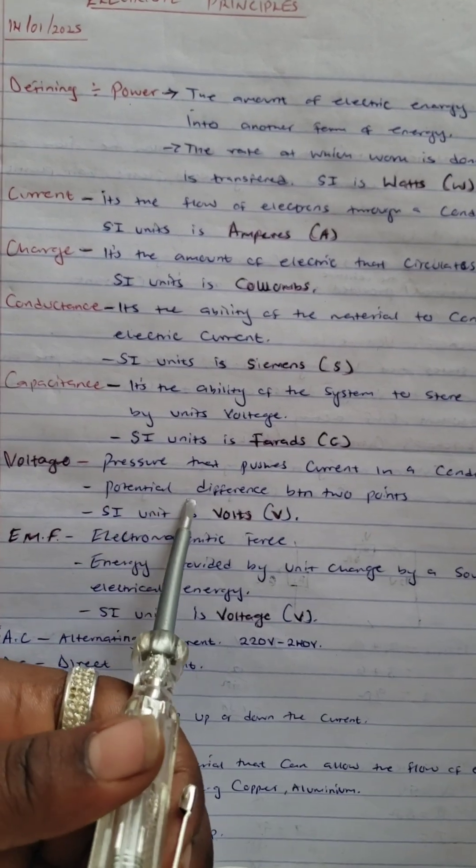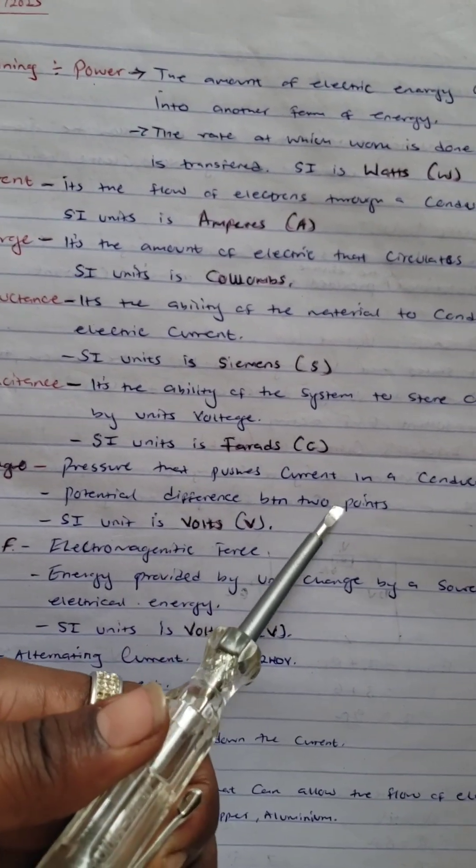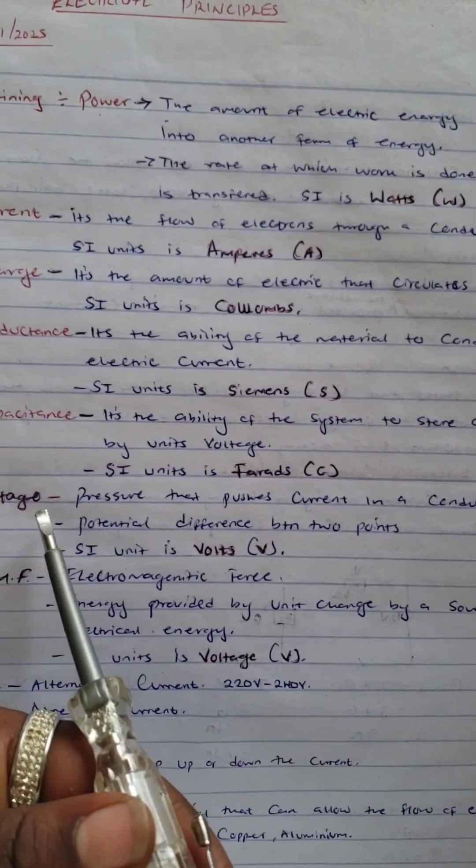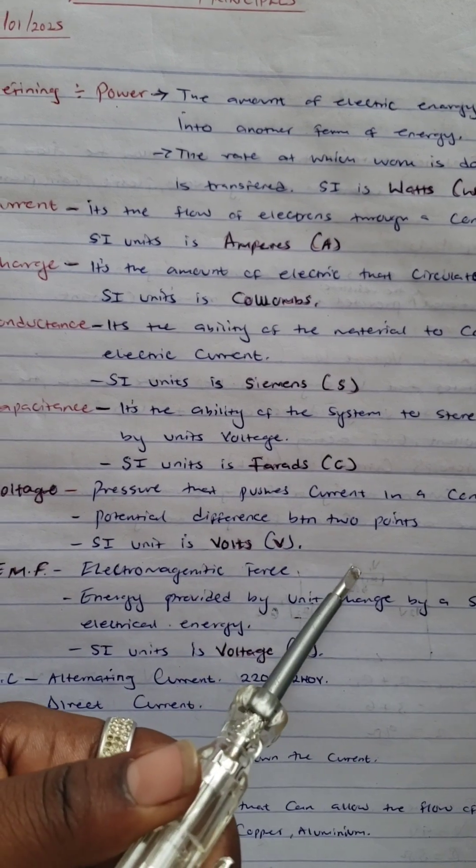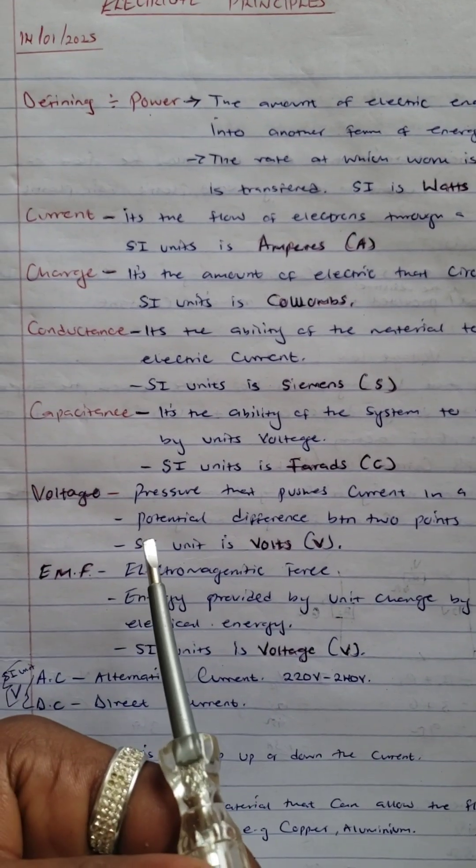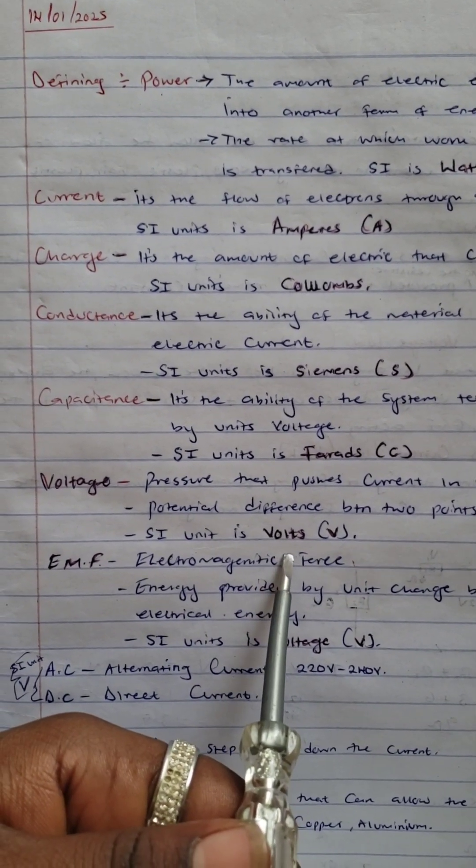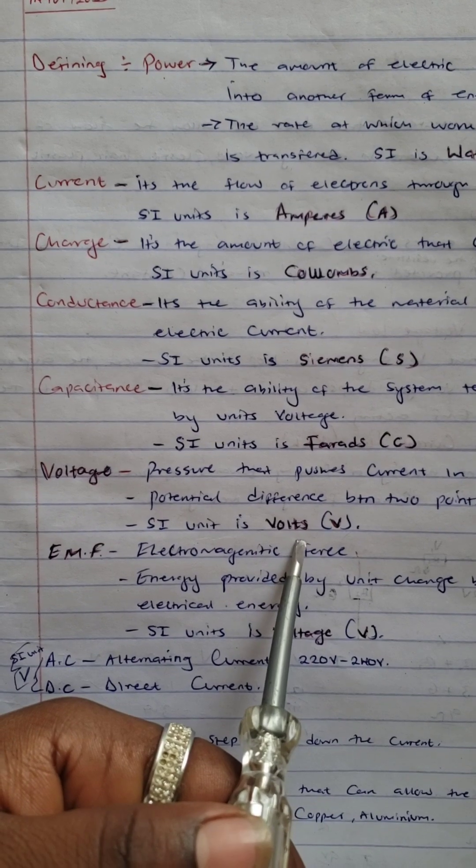Voltage. Voltage is the pressure that pushes current in a conductor, potential difference between two points. The SI unit of voltage is volts, in brackets, letter V.